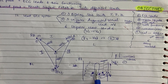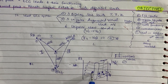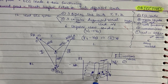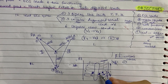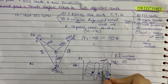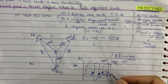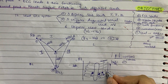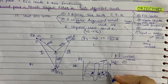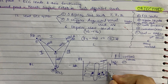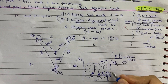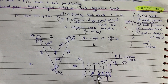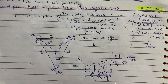Quick summary of chest leads: V1 is on the right side of the sternum in the fourth intercostal space; V2 is on the left side of the sternum in the fourth intercostal space; V3 is in the mid-clavicular line; V4 is also in the mid-clavicular line in the fifth intercostal space; V5 is in the anterior axillary line at the fifth intercostal space; V6 is in the mid-axillary line at the fifth intercostal space.